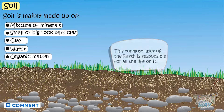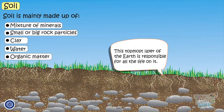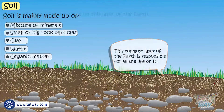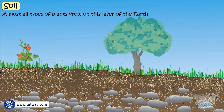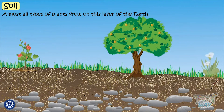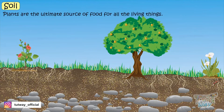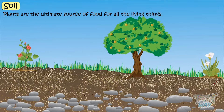This topmost layer of earth is responsible for all the life on earth, as almost all types of plants grow in this layer of the earth. And we know the ultimate source of food for all living things is plants.